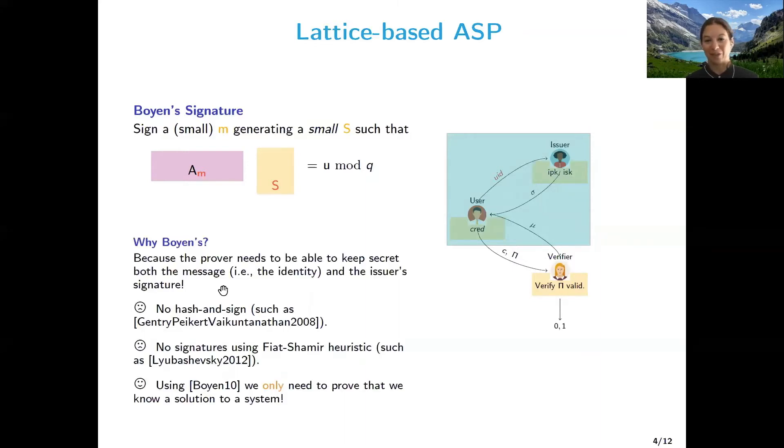We use Boyan's signature because it doesn't use hashes. So for example, it's not a hash-and-sign kind, or it doesn't use the Fiat-Shamir heuristic. So running a proof, proving that the user knows the message and the signature only entails proving knowledge of the solution of some system.